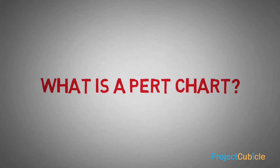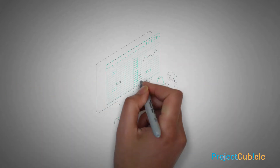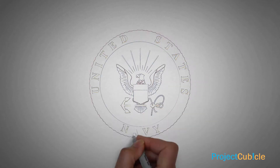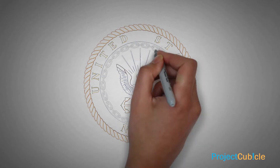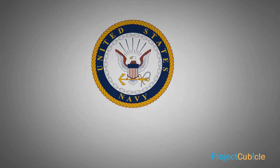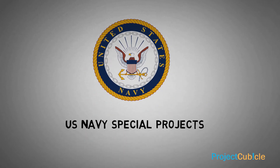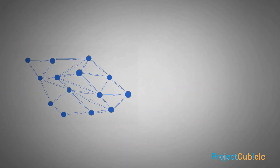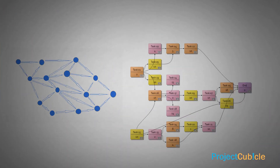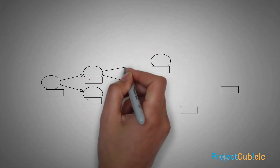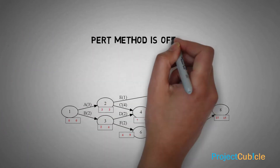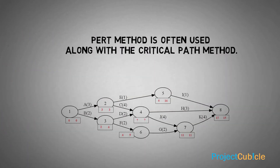What is a PERT chart? PERT stands for Program Evaluation Review Technique. It was first developed by the US Navy Special Projects Office in 1967. A PERT chart is a kind of project network diagram, like CPM charts. The PERT method is often used along with the critical path method.